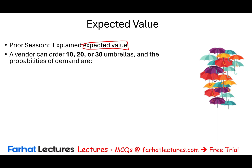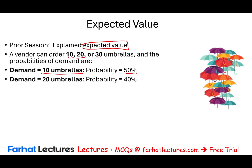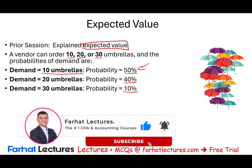In this example, we'll focus on a scenario where a vendor is selling umbrellas. This vendor can order 10, 20, or 30 umbrellas. The probabilities of demand are: demand for 10 umbrellas has a probability of 50%, demand for 20 umbrellas has a probability of 40%, and demand for 30 umbrellas has a probability of 10%.